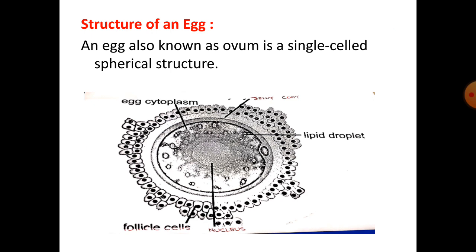Next is the structure of an egg. An egg is also known as an ovum. It is a single-celled spherical structure that contains a large quantity of nutrients. These nutrients help in the development of the embryo, providing nutrition to the developing embryo until it starts receiving nutrition from the mother.